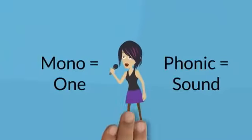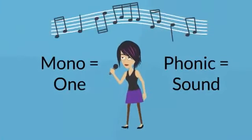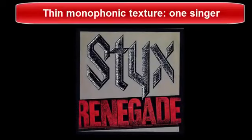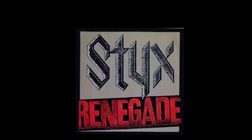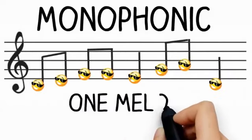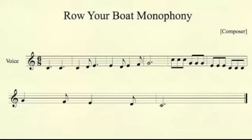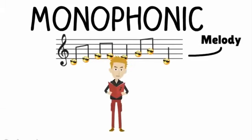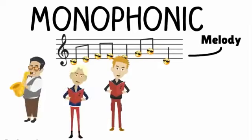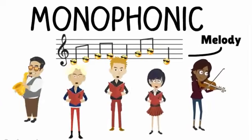The most basic texture is called monophonic. Monophonic texture has only one layer: a melody. With monophony, it doesn't matter how many instruments and/or voices are present, as long as they are all singing or playing the same thing at the same time.